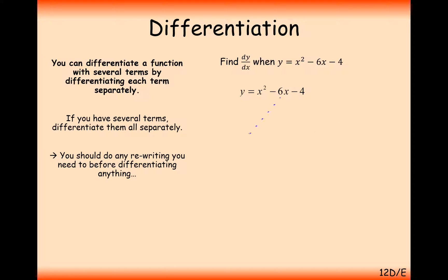Another way of explaining the two components: for minus 6x, treat this as minus 6x to the power of 1. Multiply the 1 to the front, so you get minus 6 still — 1 times 6 is 6 — and then reduce the power by 1, so it's now x to the 0. Remember that anything to the 0 is just 1, so this is effectively just minus 6.